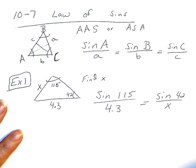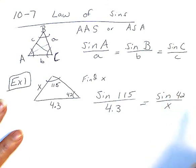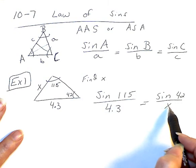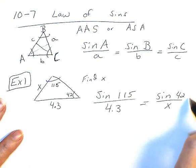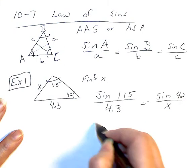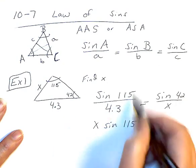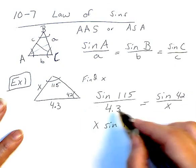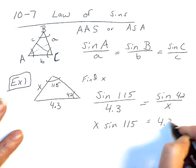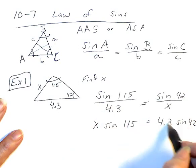So what you want to do is you want to get X off the bottom. But since you have two fractions and they're set equal to each other, the easiest way to do that is to cross-multiply. So I'm going to multiply this side by X, but it cancels out. So I have X sine of 115. And then I'm going to multiply both sides by 4.3. So that side canceled out. So I get equals 4.3 sine of 42.